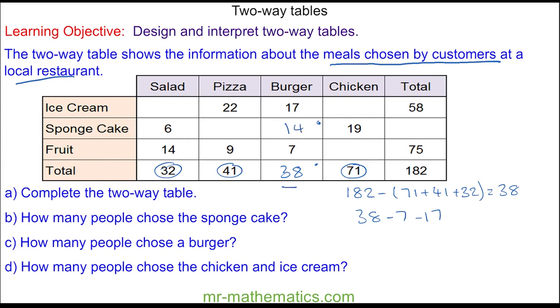From here I can work out the total number of sponge cakes, which is 182 take away the other values, which is 49.